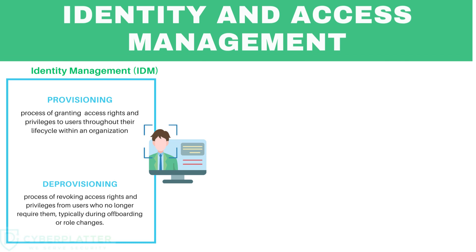Identity and access management systems are two separate systems in any organization. Identity management involves the process of provisioning and deprovisioning user accounts within the system. Provisioning refers to the creation of a new user account. Deprovisioning means removing a user account from the company's database whenever the user or employee leaves the company. Both provisioning and deprovisioning together are called user lifecycle management, and an identity management system takes care of this.